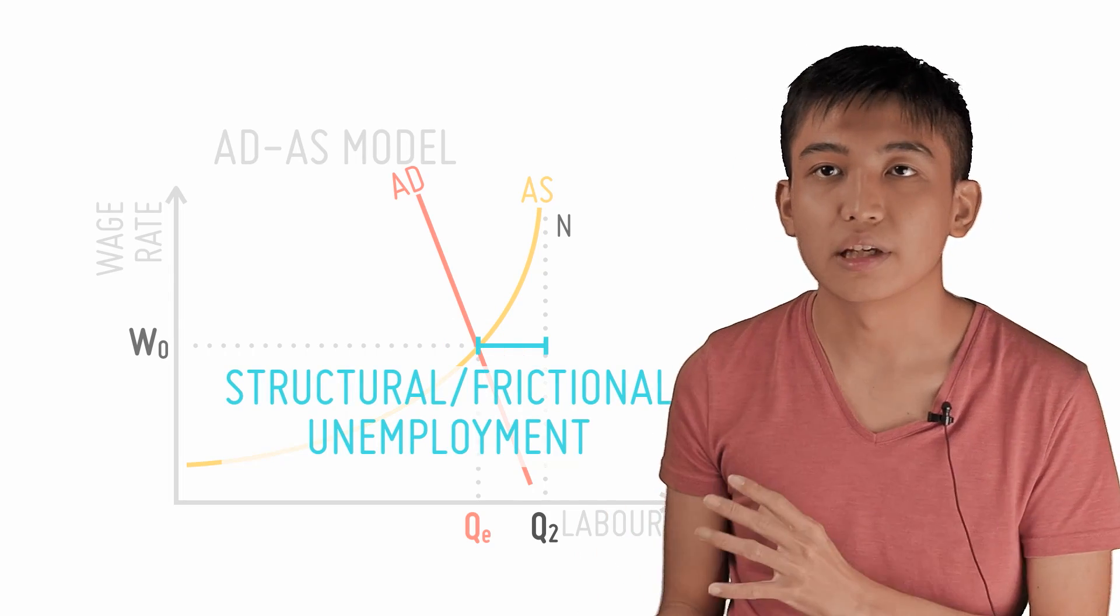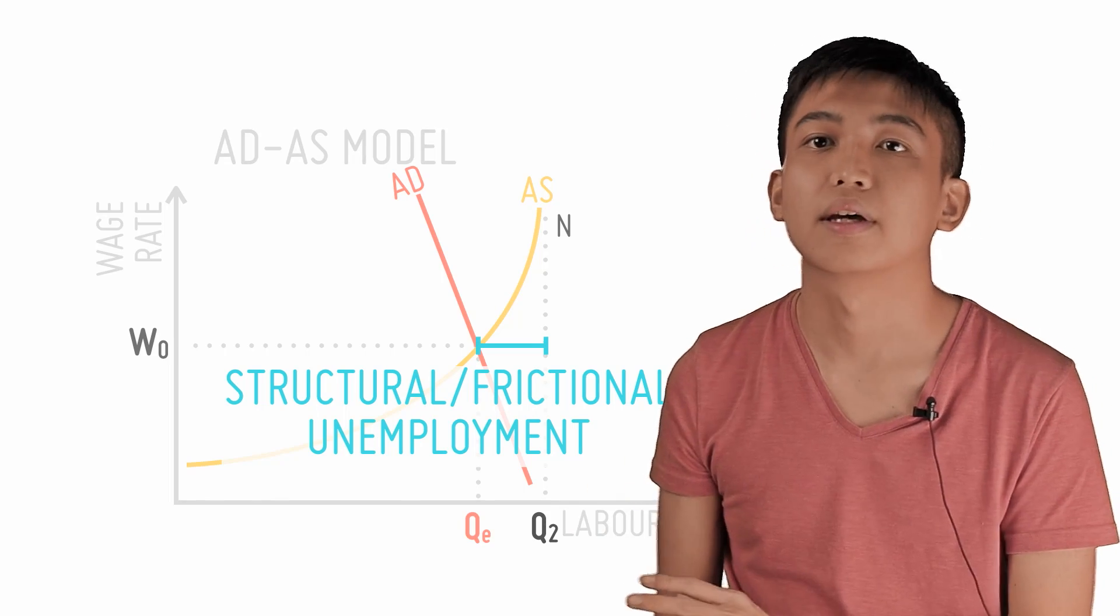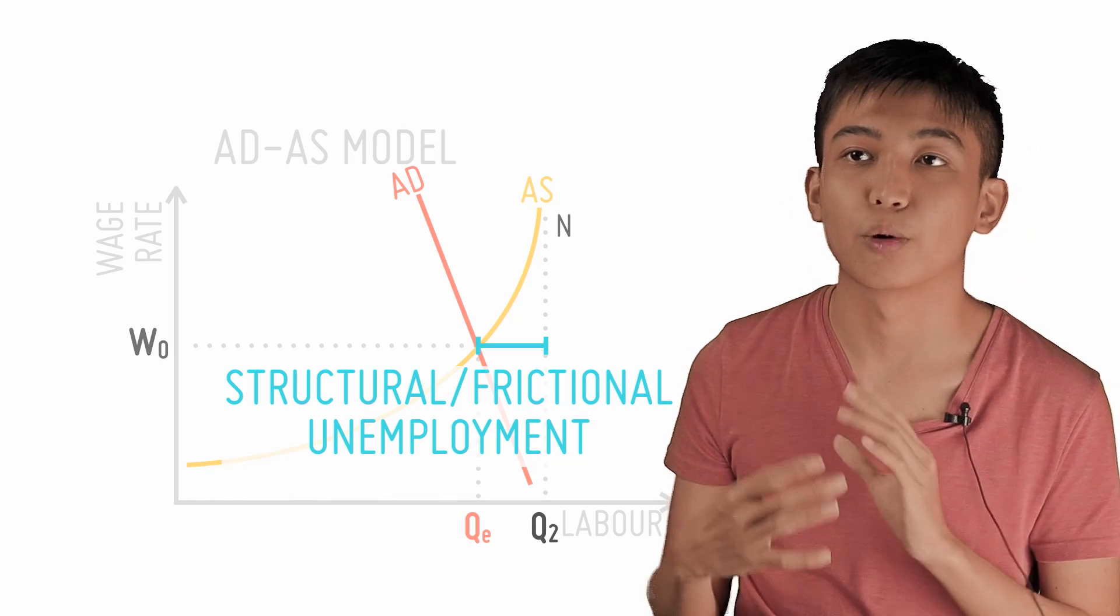Whereas Q2 minus QE represents the amount of structural and frictional unemployment in the economy. In some sense, QE represents what is full employment given our previous definition.